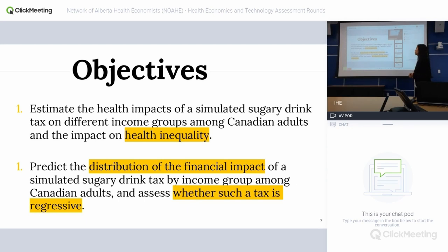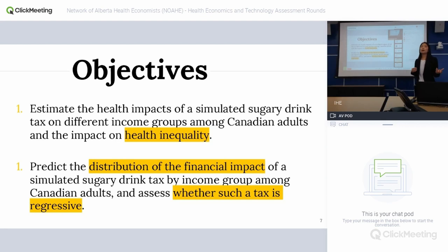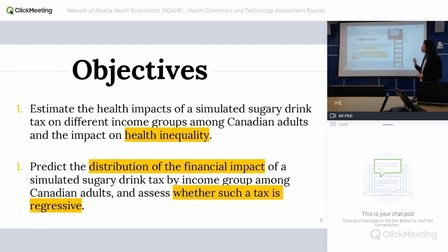The objectives of my study are to look at the health and financial impact on inequality. Similar modeling studies have been done in other countries such as Indonesia and Australia, but the results are different. In Indonesia, because high-income families consume more sugary drinks, after the tax the high-income family actually gets more health benefit. But in the Australian study, low-income families benefit more because they consume more sugary drinks. The result is highly dependent on context, so it's necessary to do a study in the Canadian context. We'll look at health equity impact and the distribution of financial impact to see if this tax is regressive in Canada.